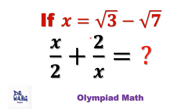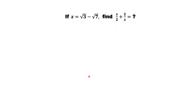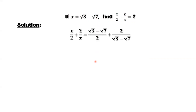We want to find the value of this expression. Now in general, how do we solve this kind of question? The first step is to just plug in the value of x — replace x by square root of 3 minus square root of 7. Then plug in here and here.